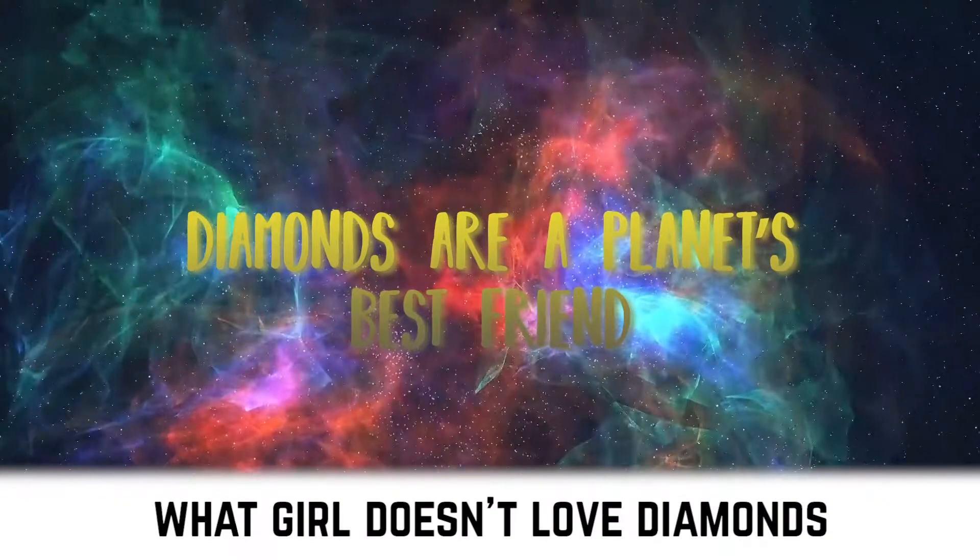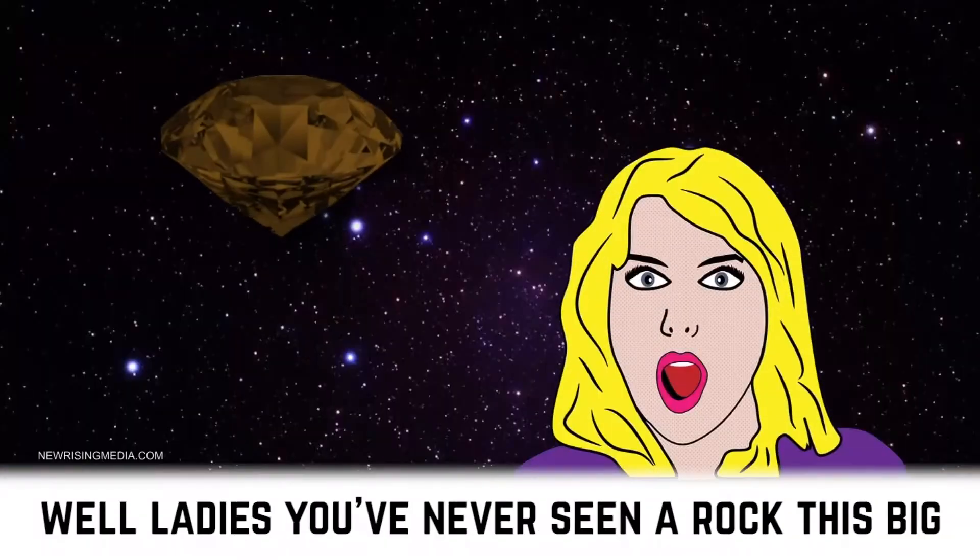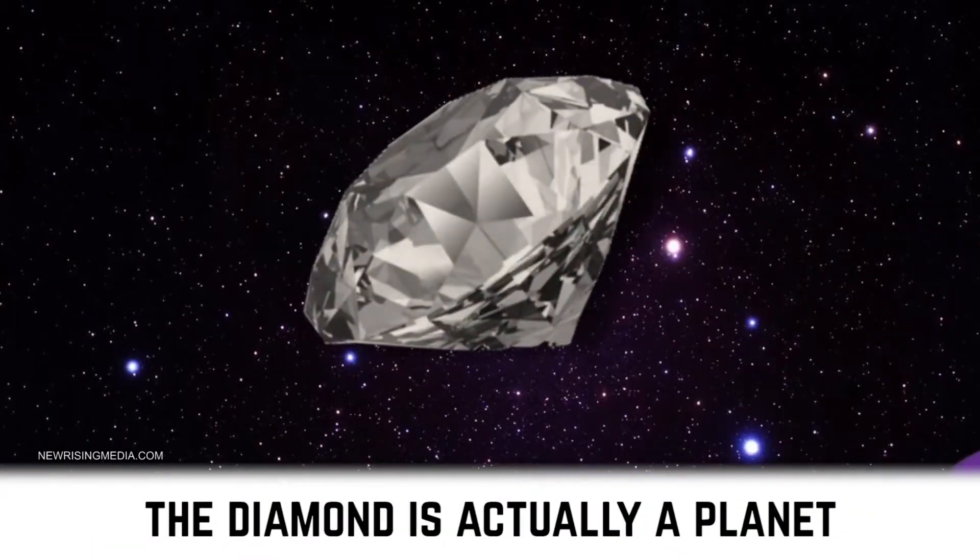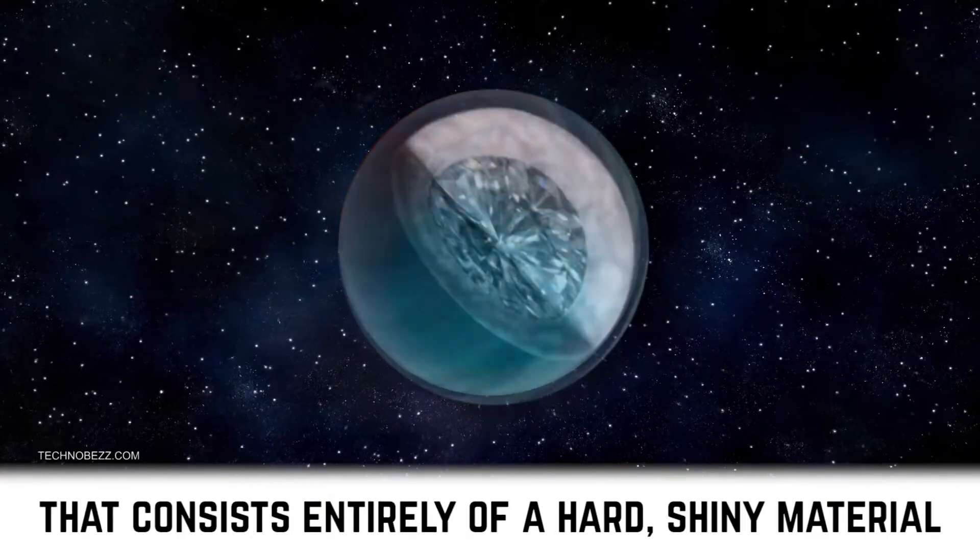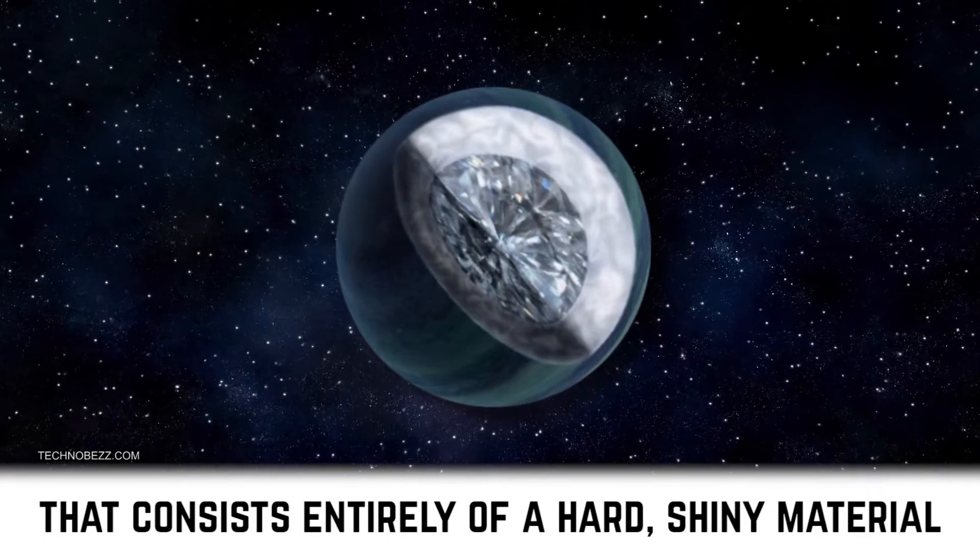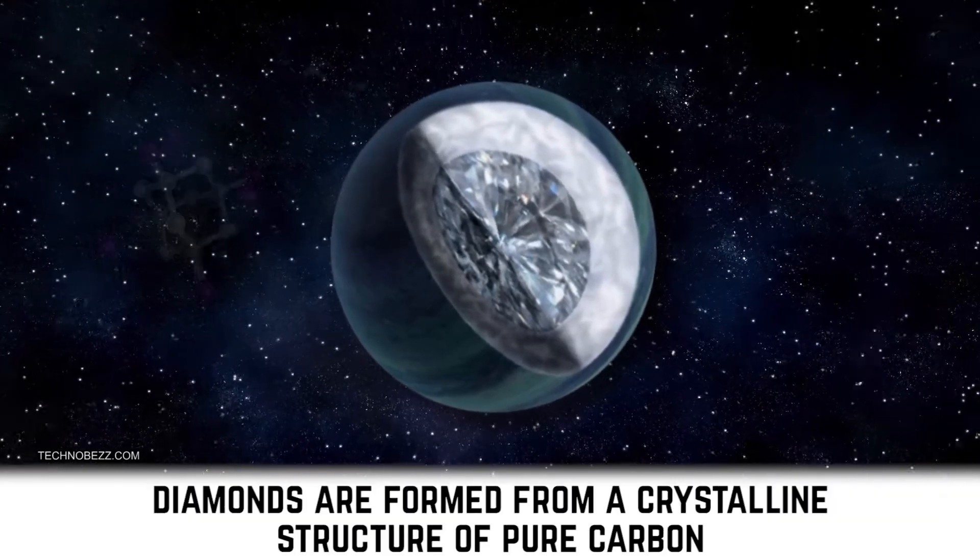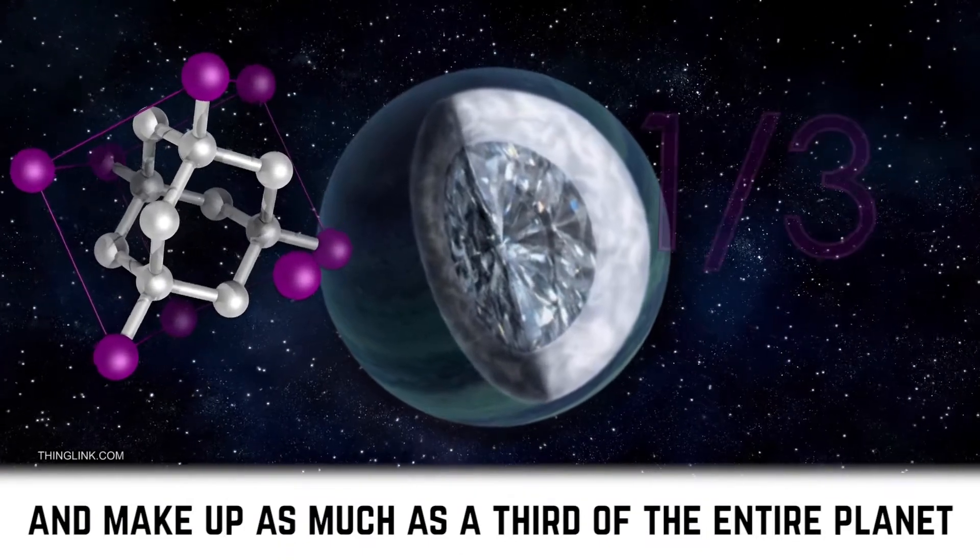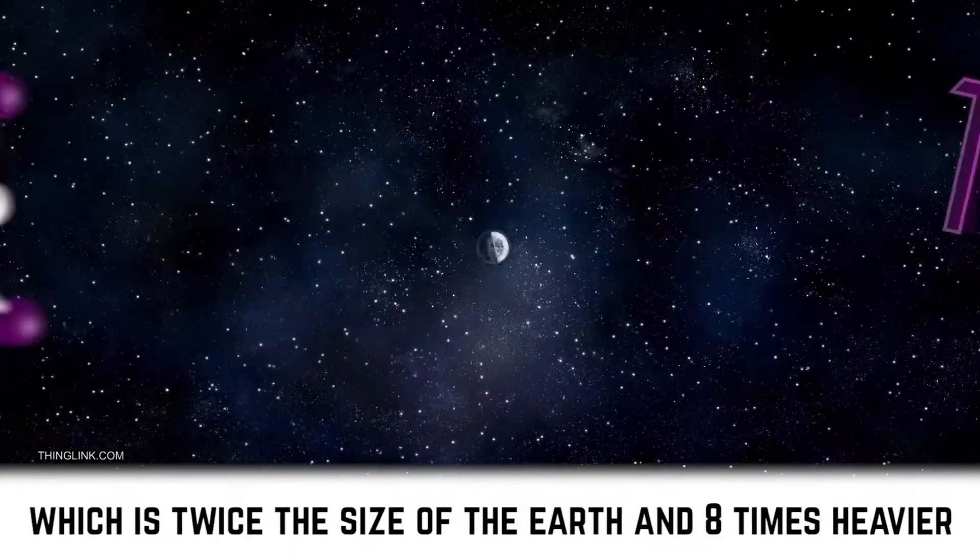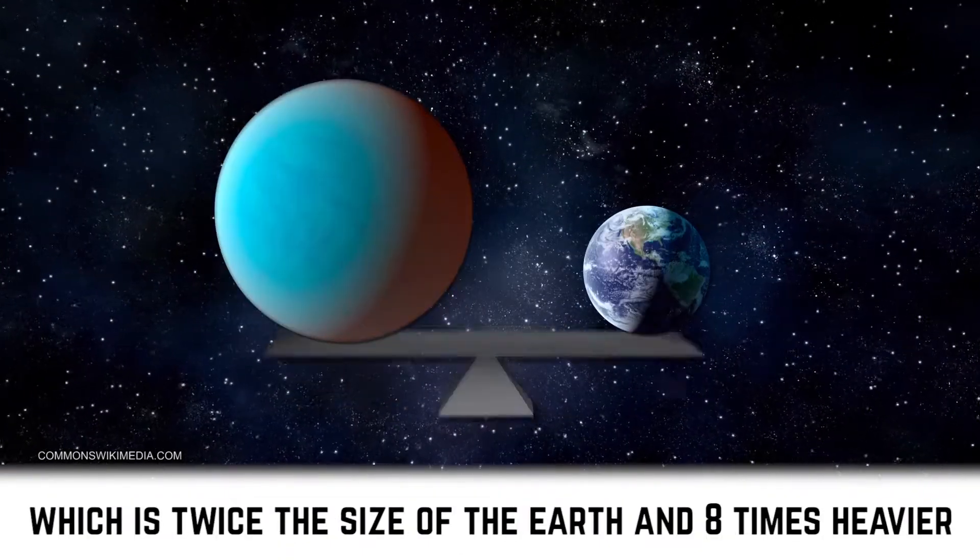What girl doesn't love diamonds? Well, ladies, you've never seen a rock this big. The diamond is actually a planet, known as 55 Cancri E, that consists entirely of a hard, shiny material. Diamonds are formed from a crystalline structure of pure carbon and make up as much as a third of the entire planet, which is twice the size of the Earth and eight times heavier.